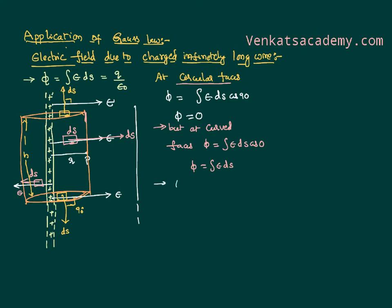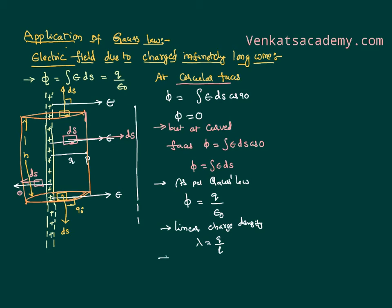As per the Gauss law, the total flux equals total charge divided by epsilon-0. But since this is an infinite wire, we don't directly know the total charge. So we use a term called linear charge density, defined as charge per unit length. Our cylinder has a length h, so the total charge enclosed is linear charge density multiplied by the length of the cylinder. Defining charge per unit length as lambda — called linear charge density — we can write the total charge as lambda times h.